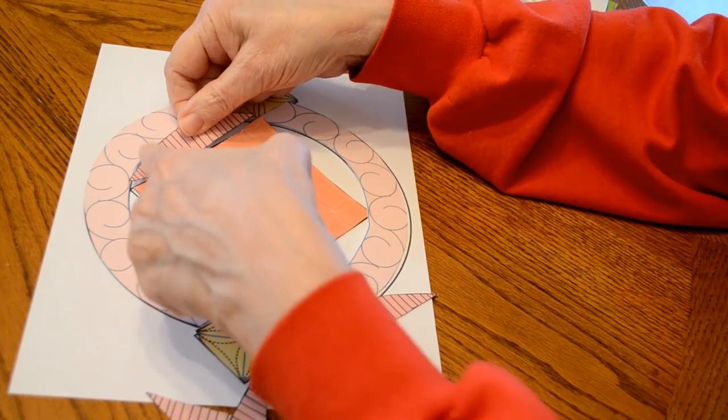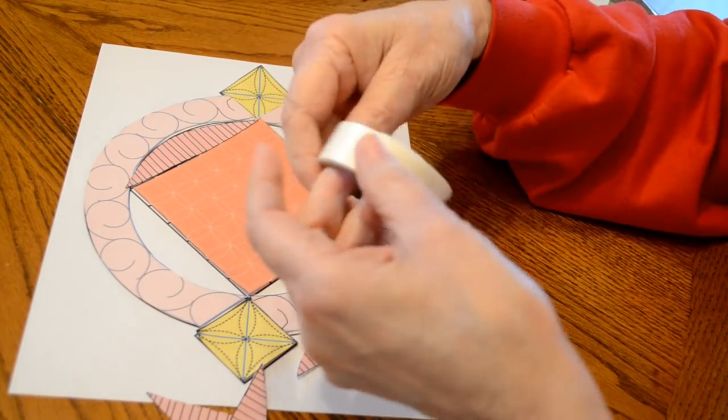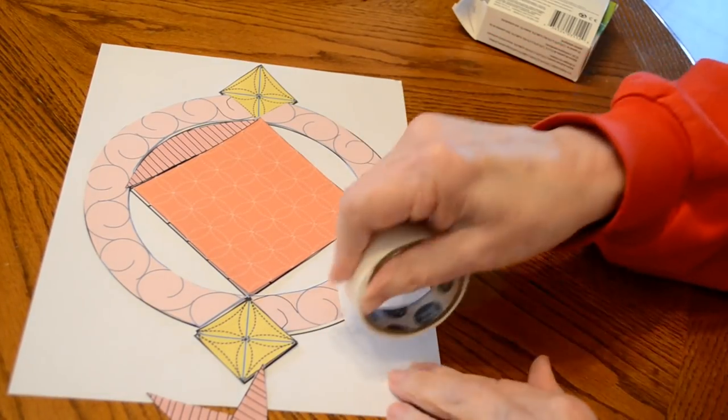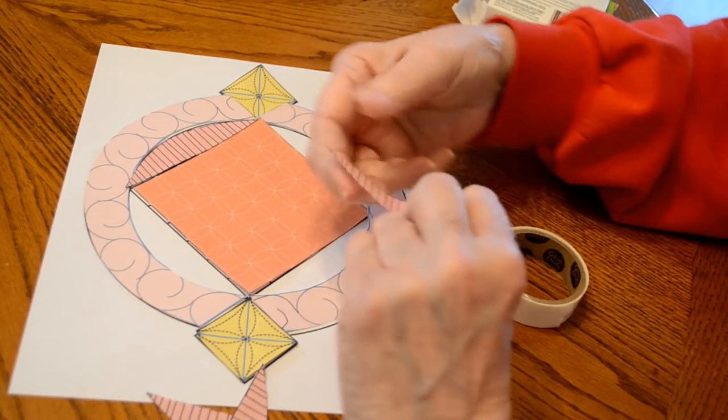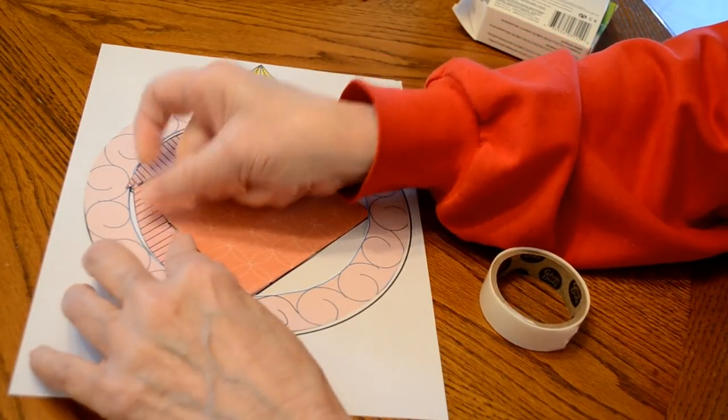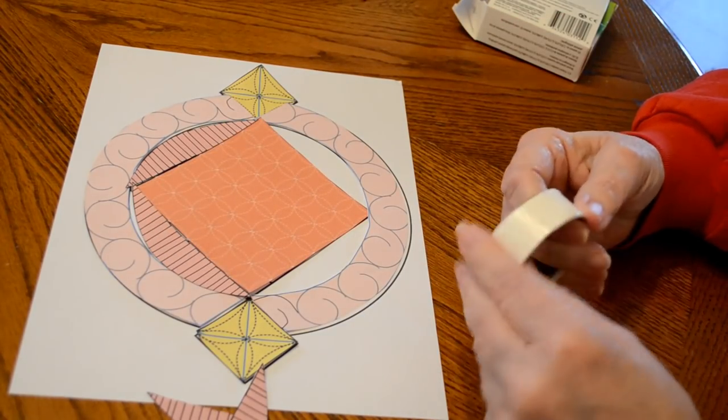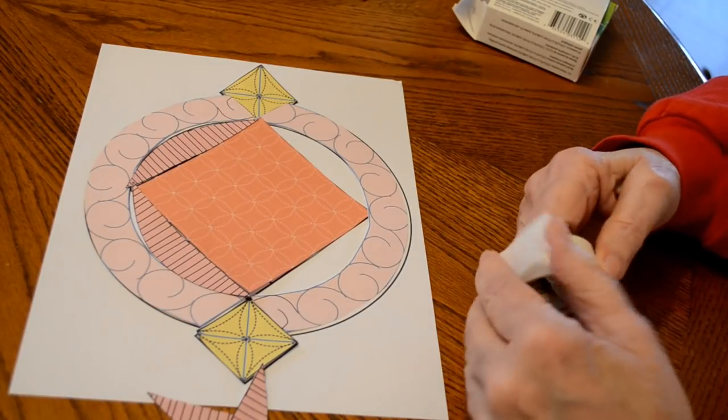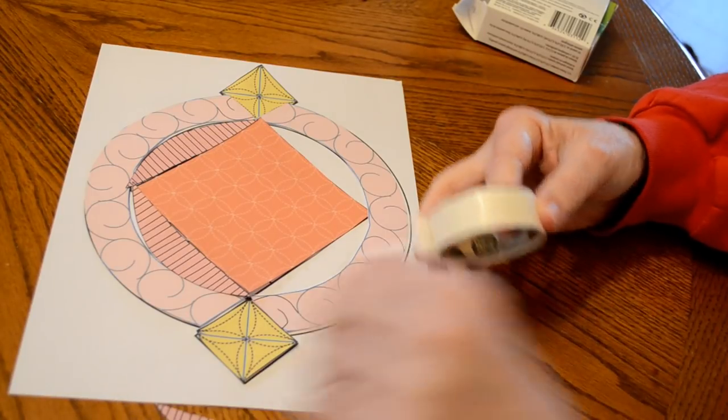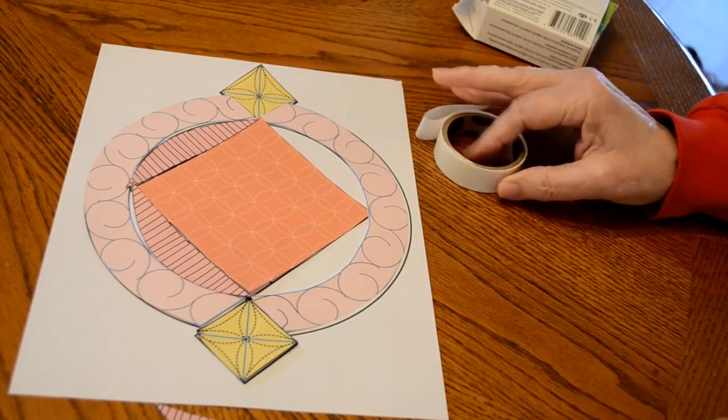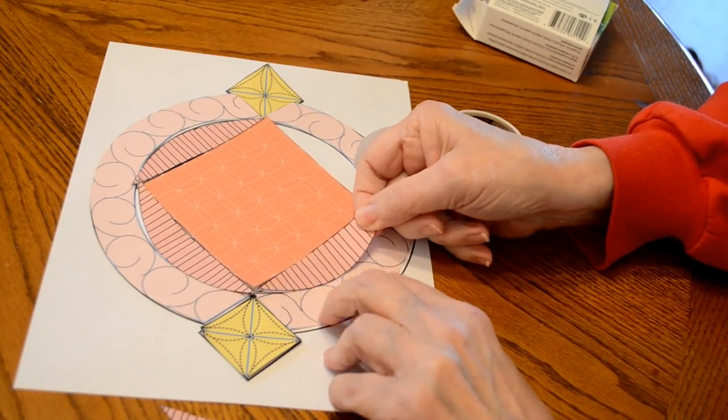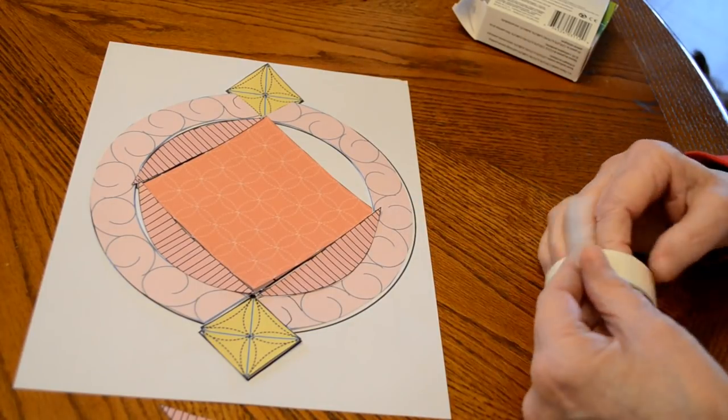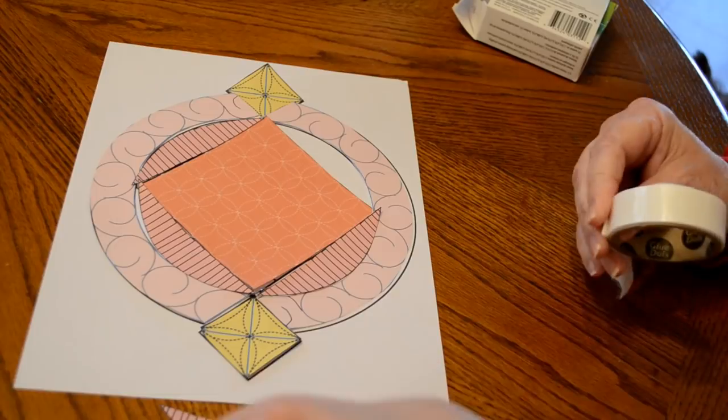So once you decide which designs you want to use, then those are the ones you want to practice before you start putting it on your row two. You have a lot to choose from, but once you break it down into the designs you actually want, it's not as overwhelming.